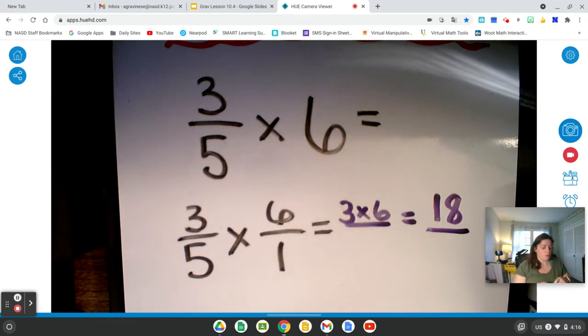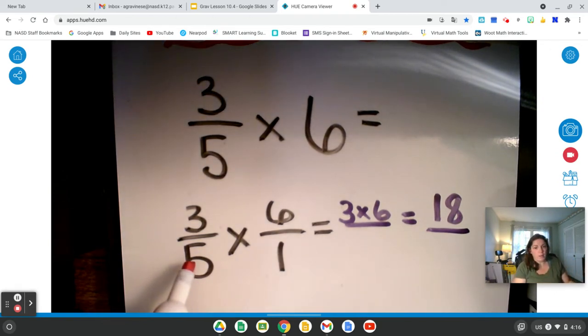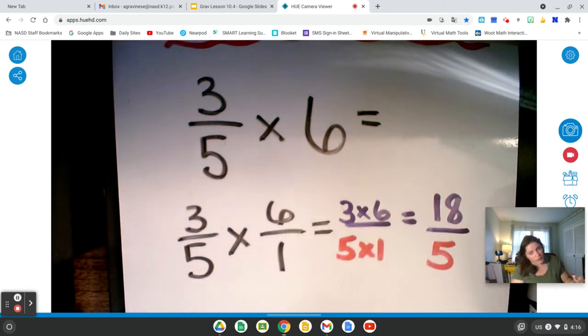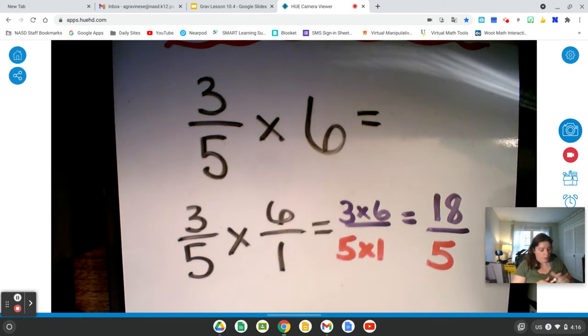That's my numerator. Now you don't have to write this step. I'm just writing that until everybody learns what to do. And then we multiply our denominators. 5 times 1, and that equals 5. So I have the fraction 18 fifths. That's improper. Let's see if we can write it as a mixed number.